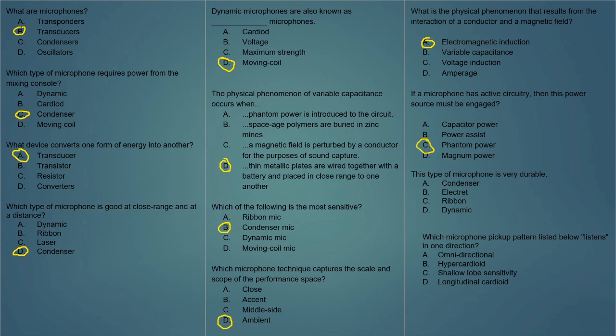This type of microphone is very durable — A, condenser; B, electrette; C, ribbon; or D, dynamic? The answer is D, dynamic mic. We didn't talk about electrette or ribbon microphones in this presentation, but ribbon microphones are also very fragile. Electrette microphones, also known as lapel mics — the kind you see during TV interviews — are a type of condenser microphone; also fragile, but since they're so small they're not as likely to break. Dynamic microphones are very durable — you can throw them down the stairs and they'll probably be okay.